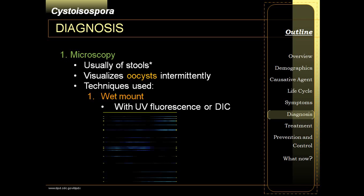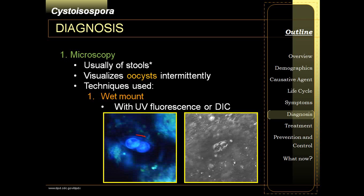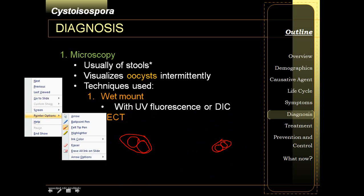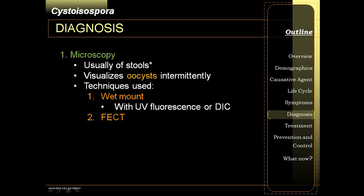Microscopy techniques are also used to visualize the cyst wall and the sporozoites inside. As you can see, there are two sporoblasts inside. Differential interference contrast also produces a single oocyst with two sporoblasts growing inside to form two sporozoites. FECT, or formalin ether concentration technique, is not really a diagnostic tool, but it is used to concentrate the samples for better viewing.